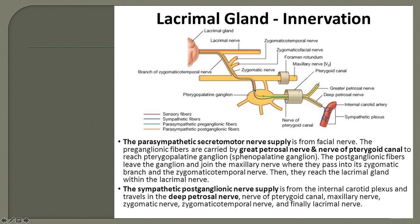After relay, the postganglionic parasympathetic as well as sympathetic fibres both run via the maxillary nerve, which gives a branch called the zygomatic nerve. The zygomatic nerve gives a branch called the zygomaticotemporal nerve, which pierces through the lateral wall of the orbit and reaches within the orbit. Near the terminal portion of the lacrimal nerve, the zygomaticotemporal nerve joins the lacrimal nerve and then innervates the lacrimal gland.